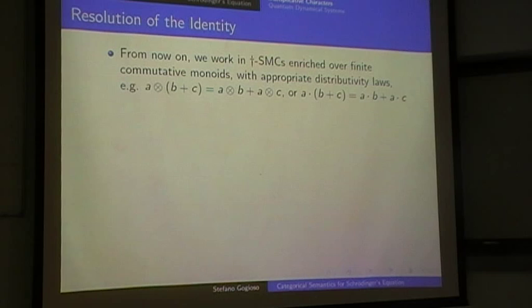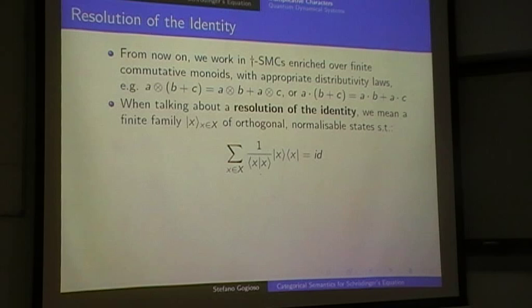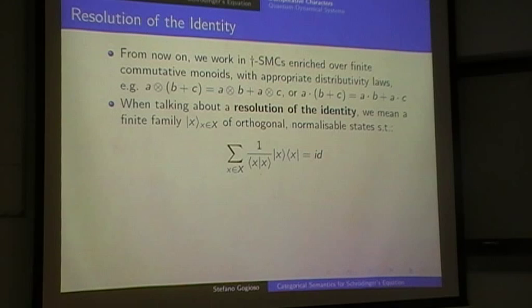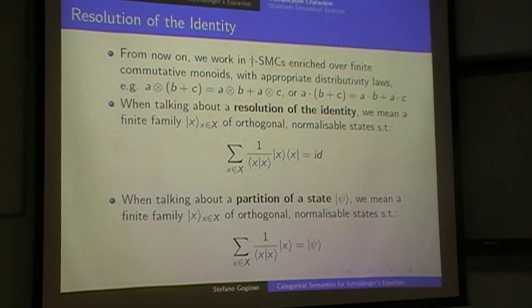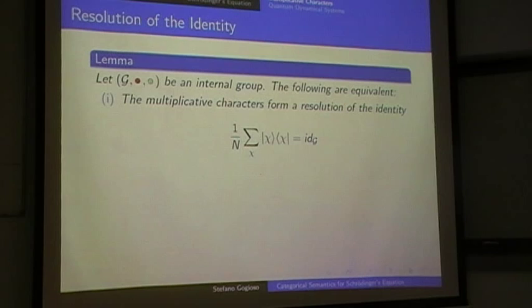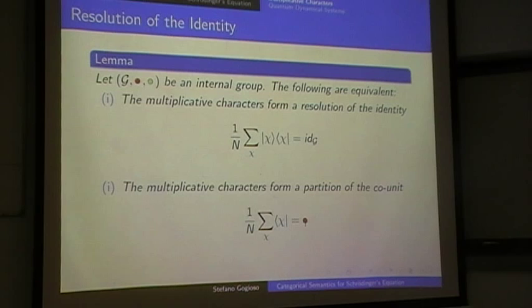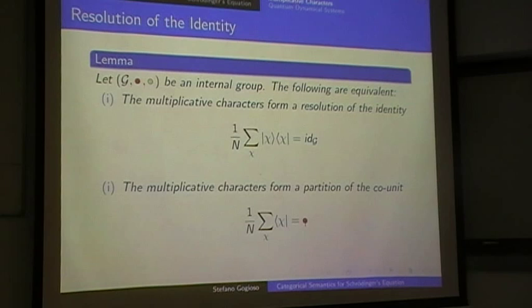This is so that I can talk about resolutions of the identity — by which we mean the usual thing, except that I will not say that the families are finite, orthogonal, and normalizable, because that doesn't need to make sense in a general category. I will actually talk about partitions of the co-unit, and the two notions are related by an equivalence for internal groups. Multiplicative characters form a partition of the co-unit if and only if they form an orthogonal basis — a resolution of the identity.